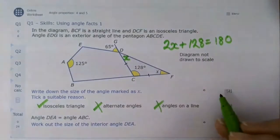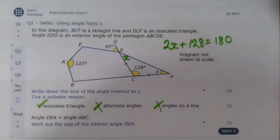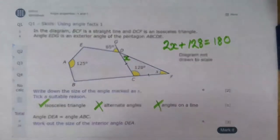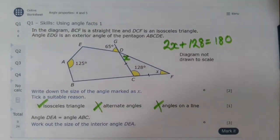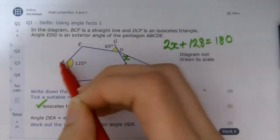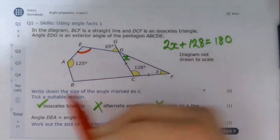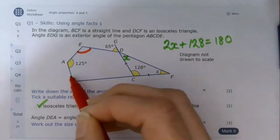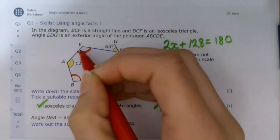Looking at the second part of this question, it tells us the angle DEA equals angle ABC. So DEA is that angle there and ABC is that angle there, and I'm going to call both of those...